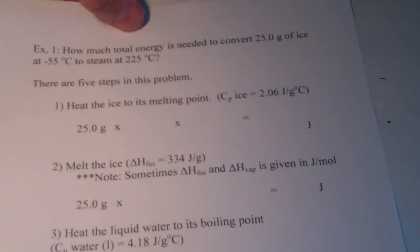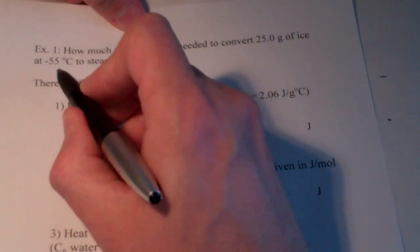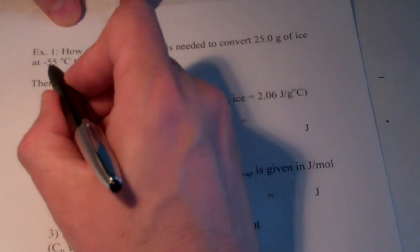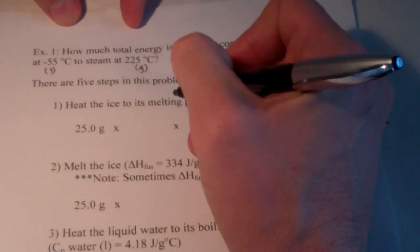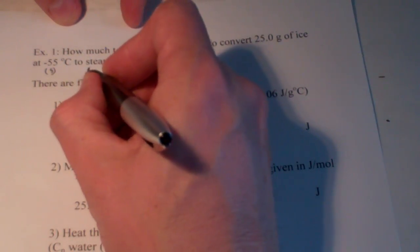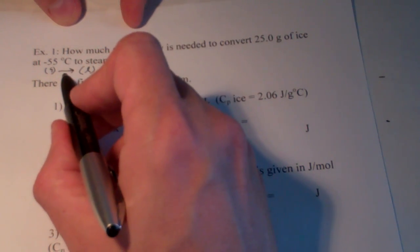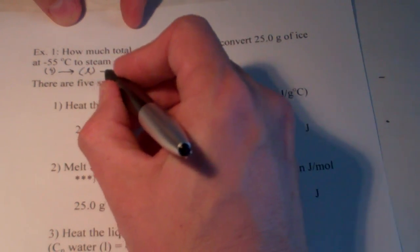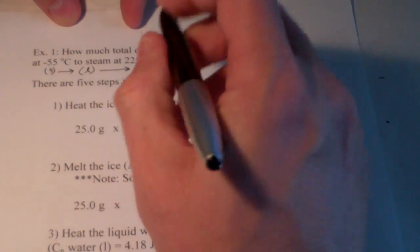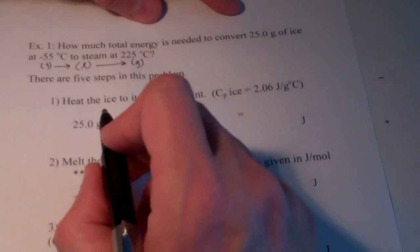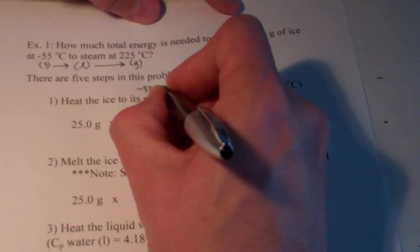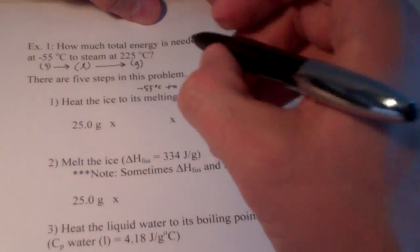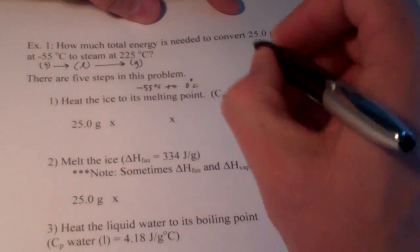We are going to take 25 grams of ice, and we're going to heat it from negative 55 Celsius to steam at 225. Now, of course, ice, water, at negative 55 is a solid. We are going to turn it into, at the end, a gas. Well, in between, we're going to end up with a liquid. So, we're going to have the heat of fusion that we're going to have to add to this process, as well as the heat of vaporization. So, there are going to be 5 steps to this problem. First of all, let's heat the ice to its melting point. So, we're going to go from negative 55 degrees Celsius to, what's the normal melting point of water? Zero degrees Celsius.